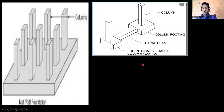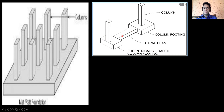Next, we have a centrically loaded column footing. In a centrically loaded column, the CG of your column and the CG of your footing are matching exactly at the center. Whereas in an eccentrically loaded footing, the column is not exactly at the CG of the footing — it is somewhere at the outer part, somewhere in a corner. When we have such an eccentrically loaded column, we try to connect it with the help of a beam so that whatever additional unbalanced moment is generated, it will be taken care of by this beam.